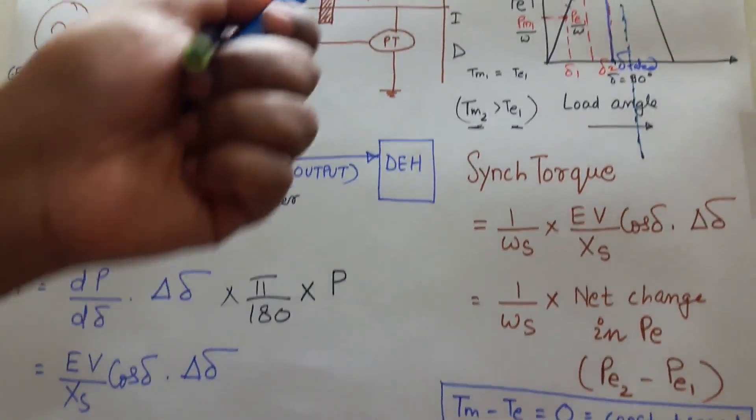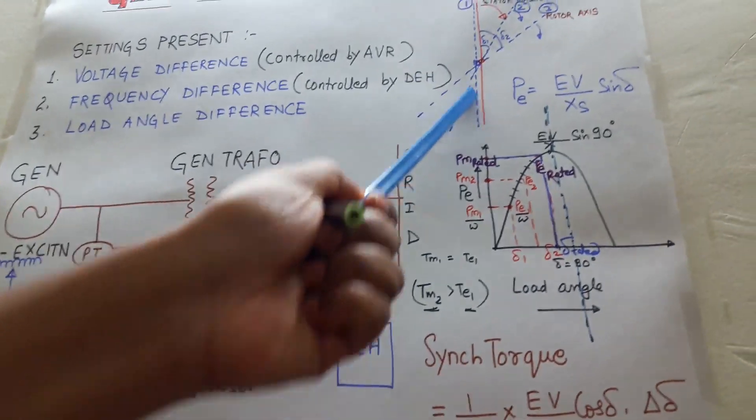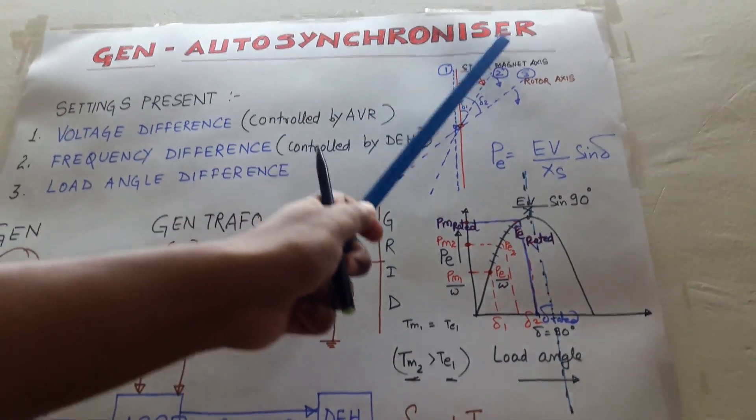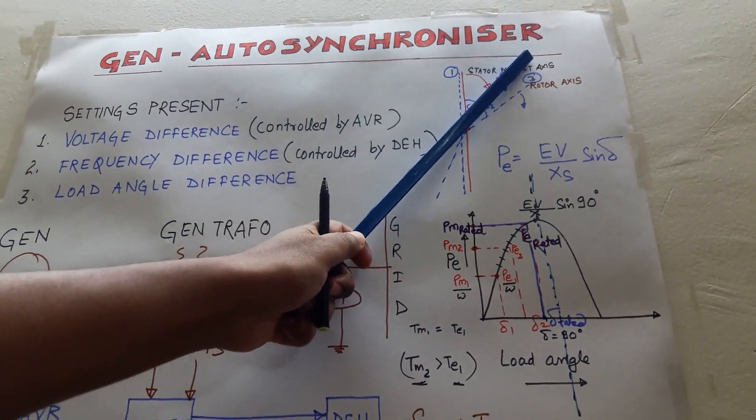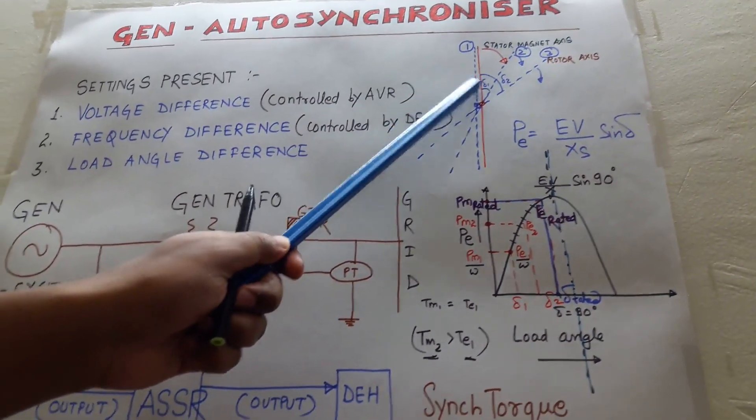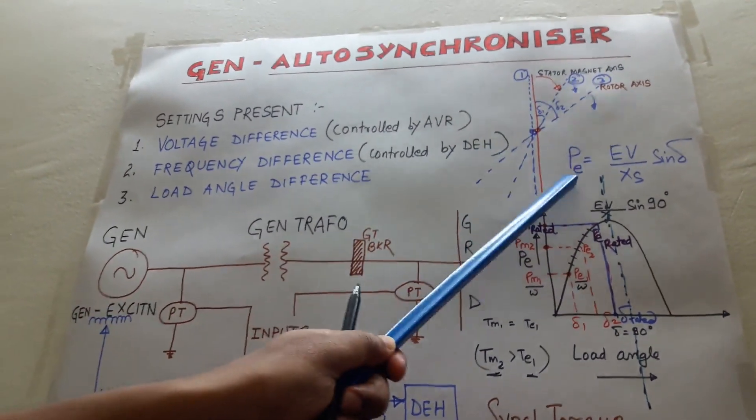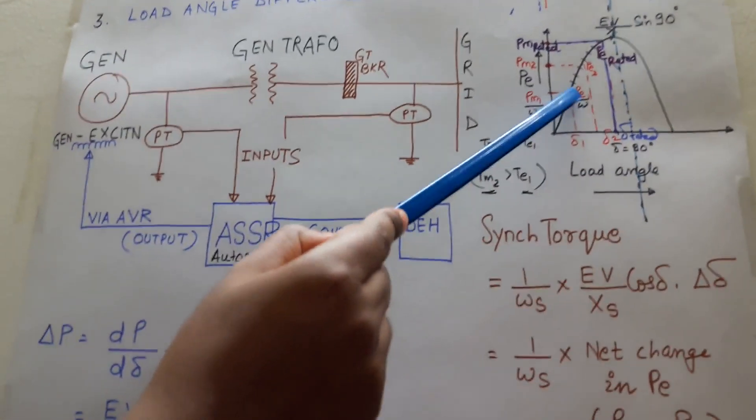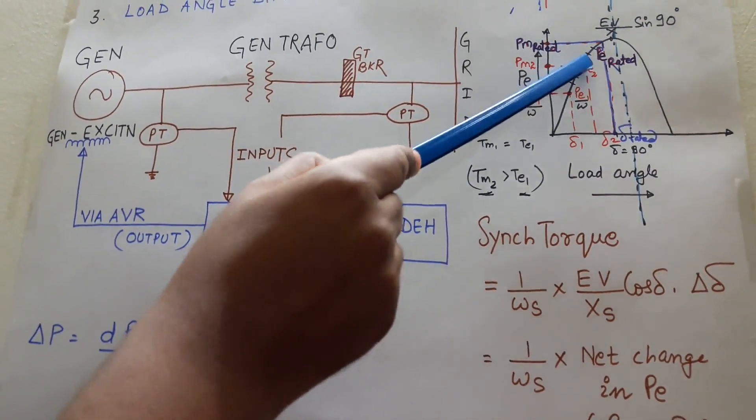And as we know from this figure, the speed of the stator magnetic wheel is constant. And now the rotor is accelerating. So the angular displacement will increase. And when the angular displacement will increase, the electrical power will increase. Now the electrical power will come from PE1 to PE2.